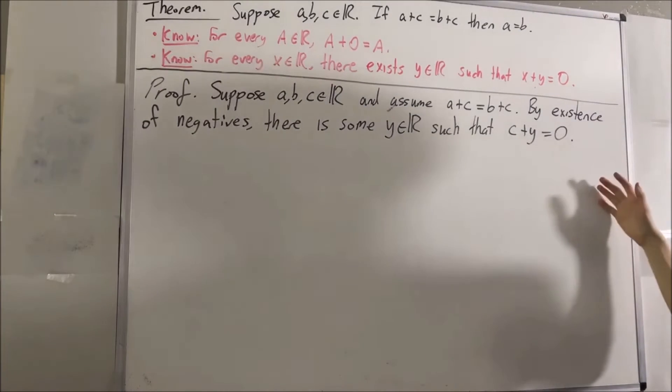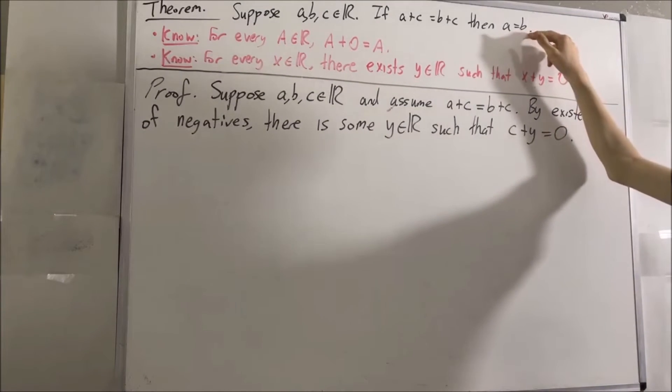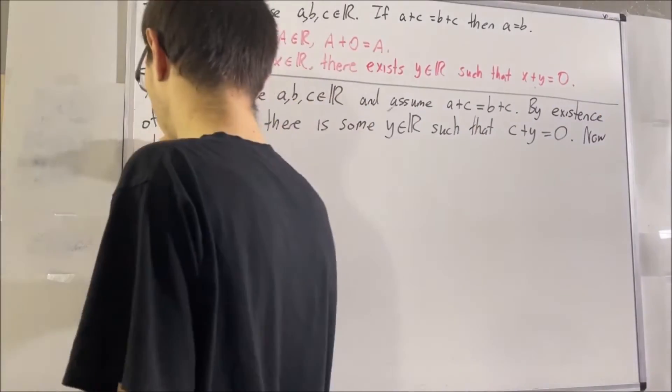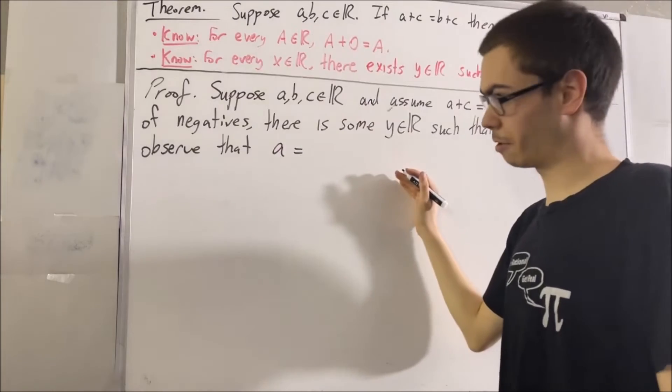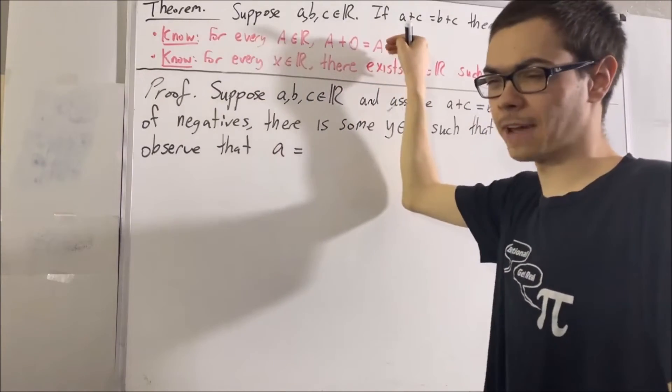Now we're going to show that A is equal to B through a chain of equalities. First of all, we know that A is equal to A plus 0. That's what our first fact tells us.